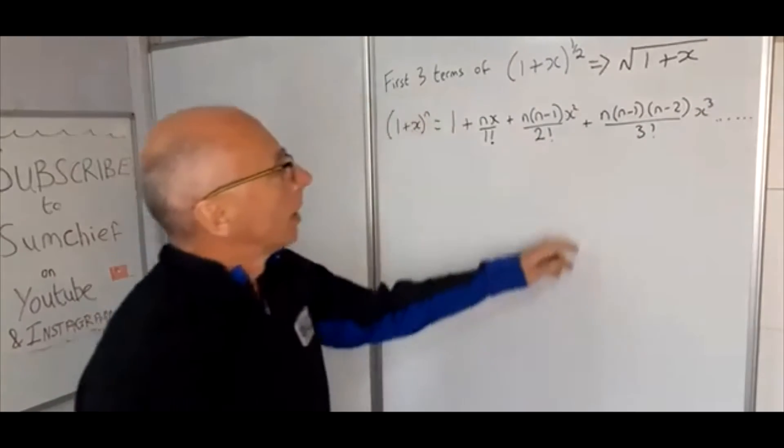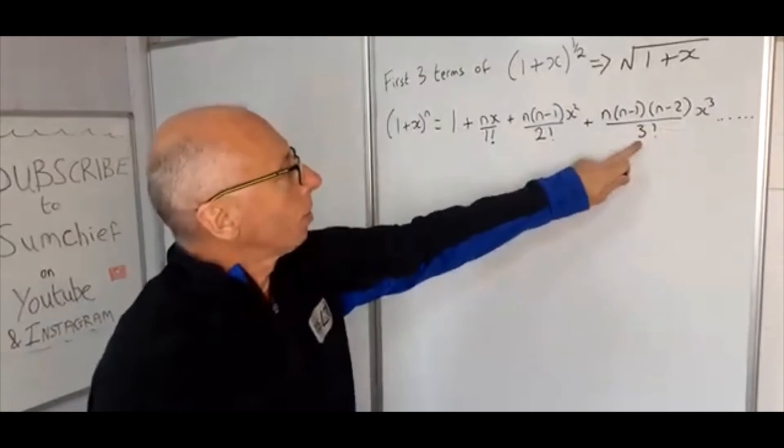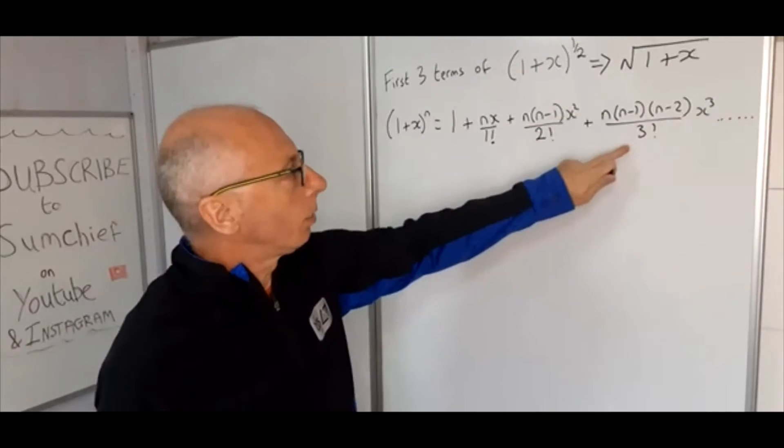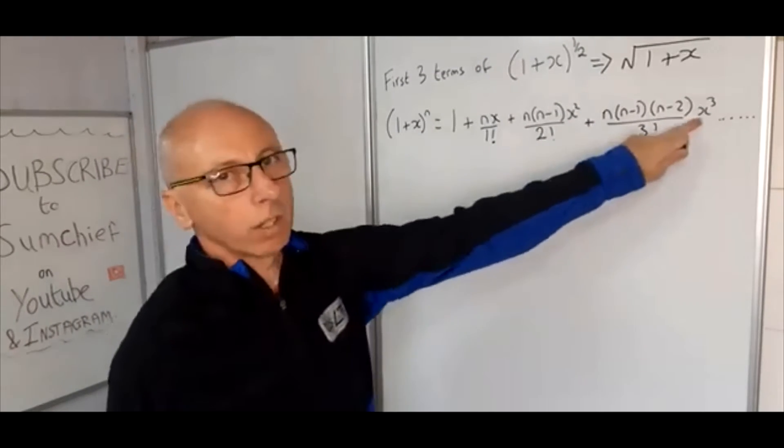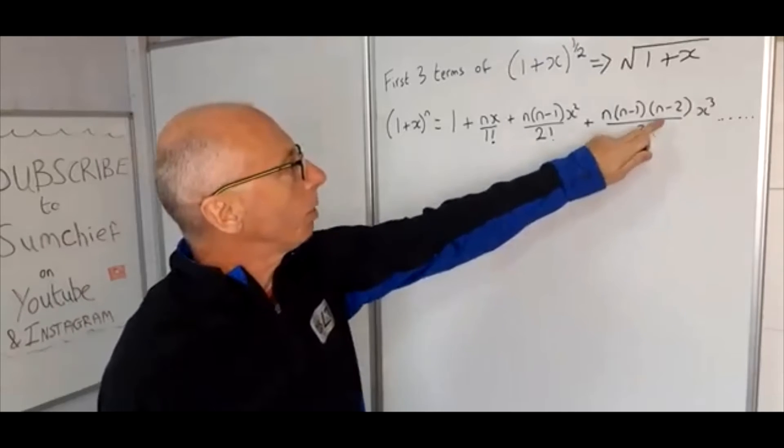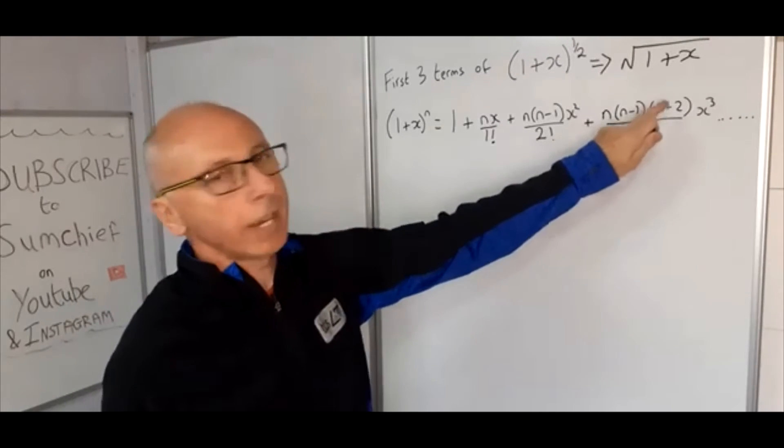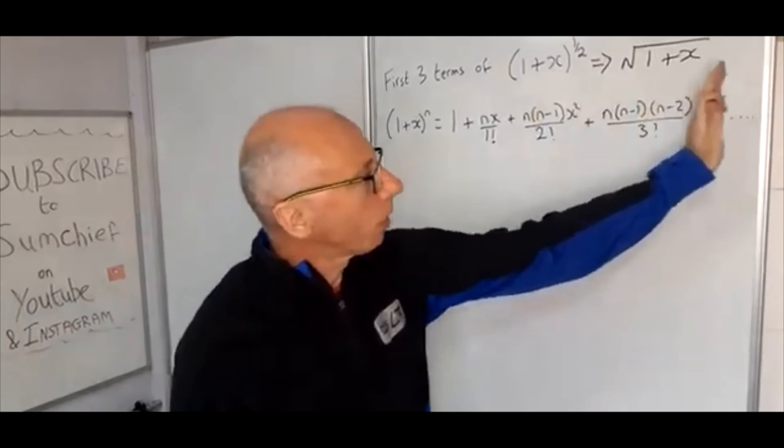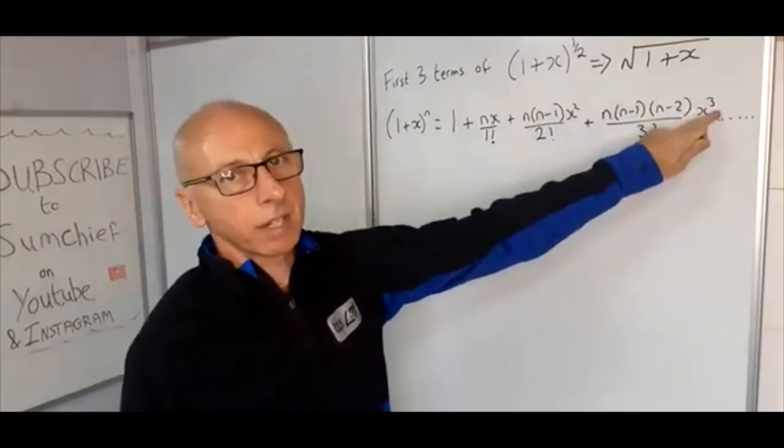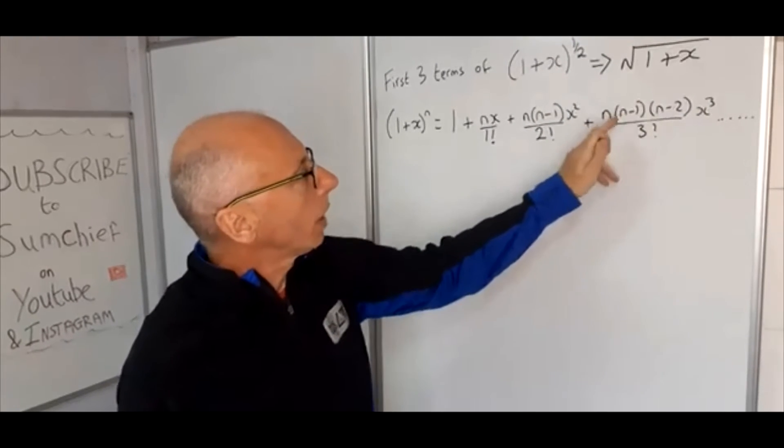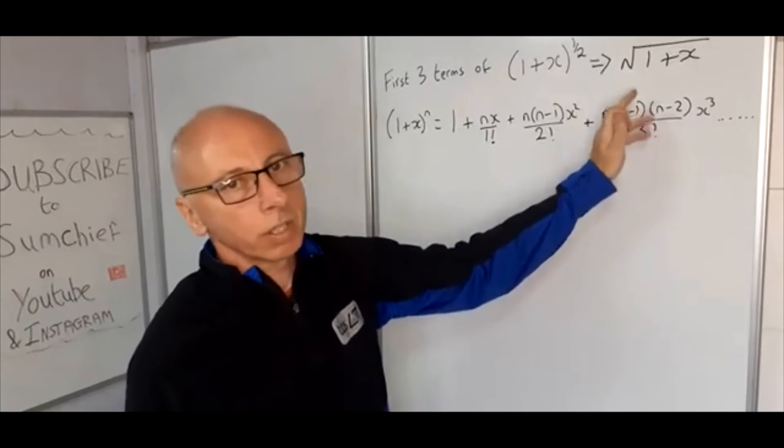So you can see the 3 and 3 here - for each term they are linked, obviously they're the same numbers. Then n(n-1) and (n-2), that keeps going all the way up. So if you go up to x to the 6, you go all the way n(n-1)(n-2)(n-3) all the way up to (n-5).